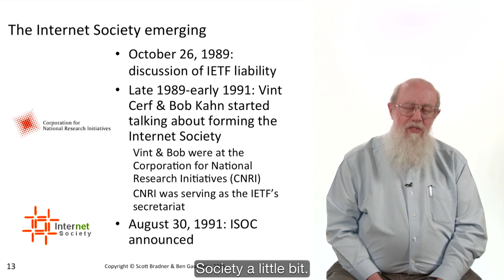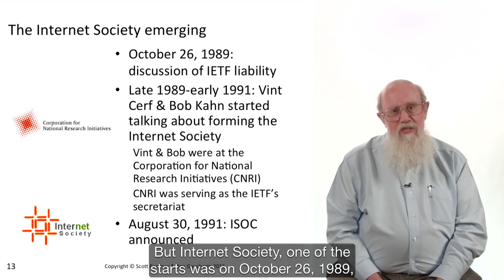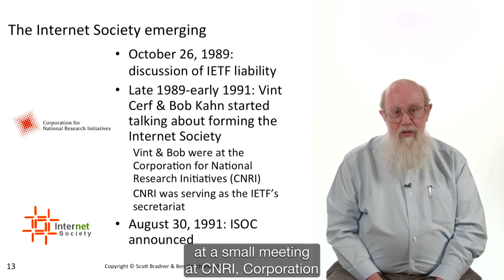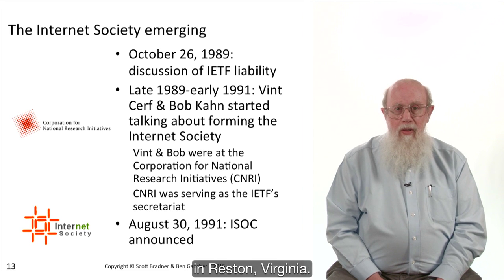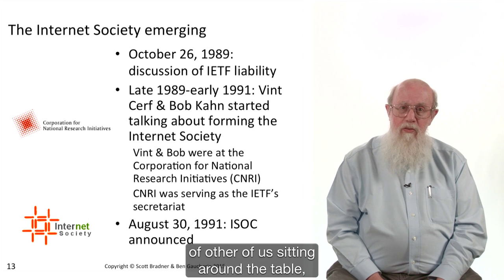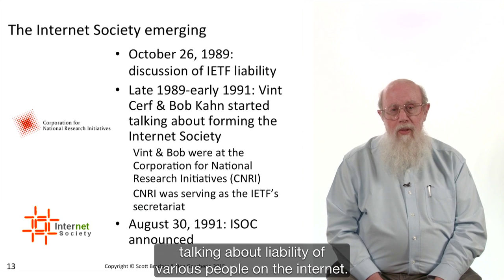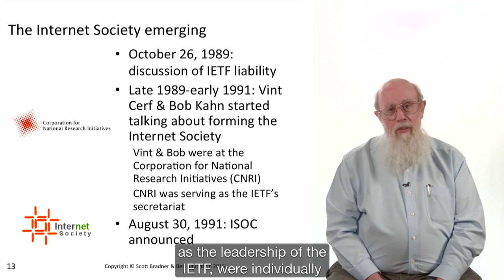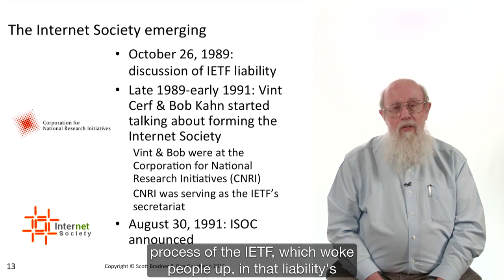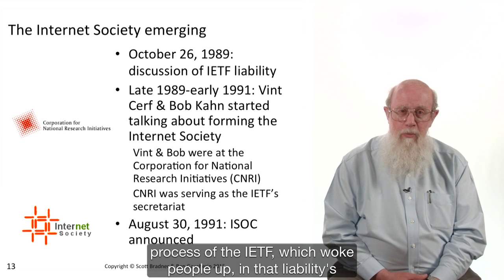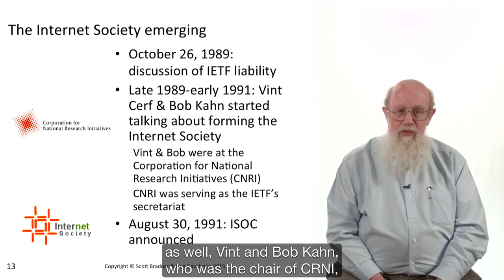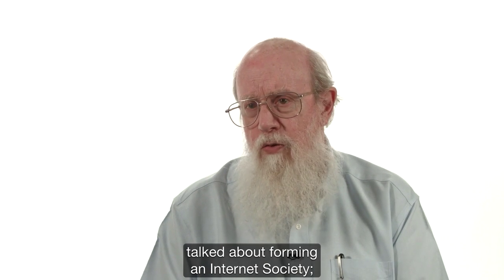Now let's look at the Internet Society. One of the starting points was a small meeting on October 26, 1989 at CNRI — the Corporation for National Research Initiatives — in Reston, Virginia. Vint Cerf, Phil Gross, and others were discussing liability. A lawyer mentioned that Vint and Phil, as IETF leadership, were individually and personally responsible for the liability of the IETF's standards process, which woke people up to the fact that liability was a serious concern. Following that meeting, Vint and Bob Kahn, who was the chair of CNRI and had previously been at DARPA, talked about forming an Internet Society to offload liability and provide other functions.